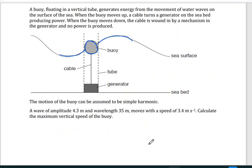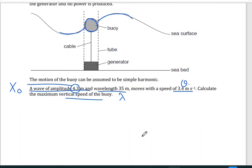The question is, the amplitude of the wave, the amplitude is the maximum displacement, so this is X-naught, 4.3 meters, and the wavelength lambda 35 meters, move with a speed of 3.4 meters per second. Calculate the maximum vertical speed of the buoy. The maximum vertical speed V will be omega, the angular velocity, times the amplitude.